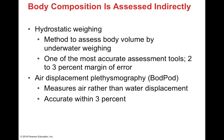How do we assess body composition? We can do hydrostatic weighing, where we assess body volume by weighing the individual underwater with a very small margin of error. Fat has a different density than muscle — fat gives the appearance of being less weight underwater than muscle would. Underwater weighing allows us to factor out fat composition and tell us how much of body weight is actually muscle. We can also use the BODPOD or Air Displacement Plethysmography, which measures air rather than water displacement, and is accurate within 3%.